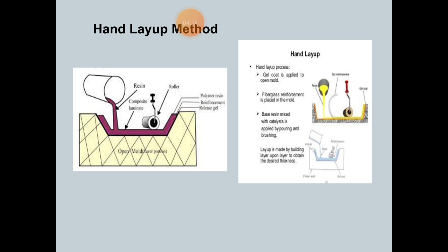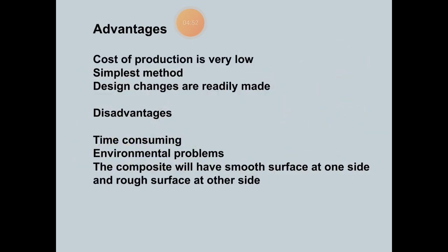This process has various advantages. Cost of production is very low. It is the simplest method, and design changes are readily made. The disadvantages: it is time consuming, environmental problems occur because this is an open process, and the composite will have smooth surface at one side and rough surface at the other side.